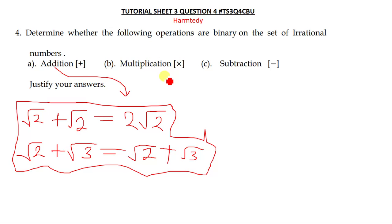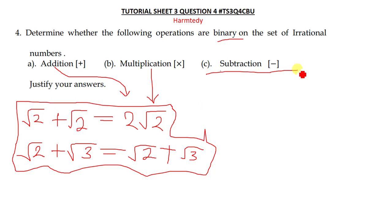The same applies to multiplication — multiplication is also a binary operation on the set of irrational numbers. Subtraction is also binary on the set of irrational numbers, because there's no way you can add, subtract, or multiply two numbers and get an undefined answer. So addition, subtraction, and multiplication are all binary operations on the set of irrational numbers.